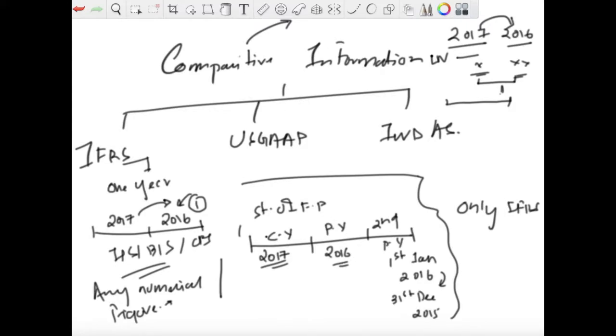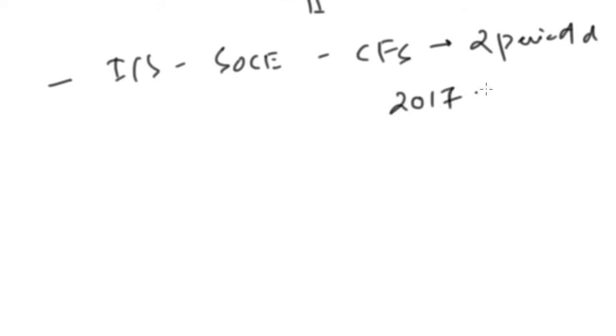Now let's discuss about the US GAAP. Now what does US GAAP say? US GAAP is primarily based on rules and IFRS is primarily based on principles. Hence, in such a case, it requires at least two years comparability for all the financial statement items, all the financial statements except balance sheet, which means for income statement, for statement of changes in equity and for cash flow statement, they require at least two period disclosures, that is for 2017, 2016 and for 2015.